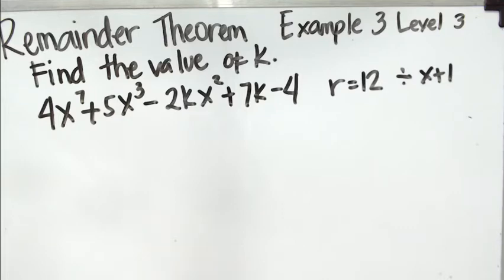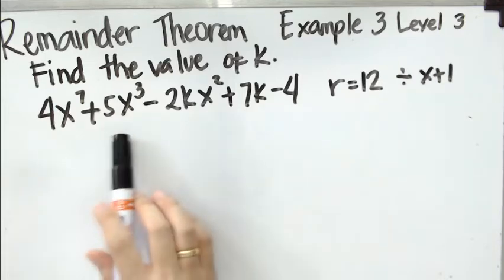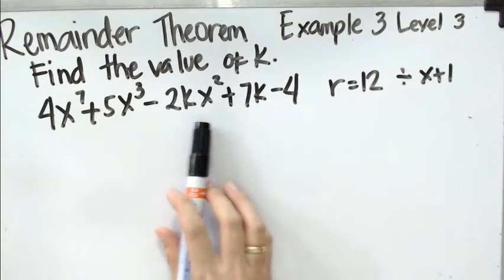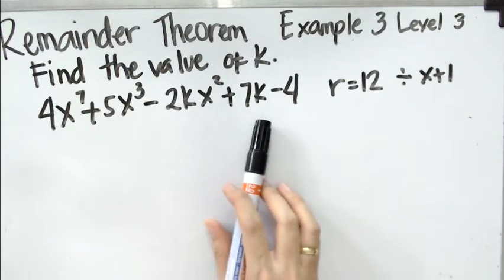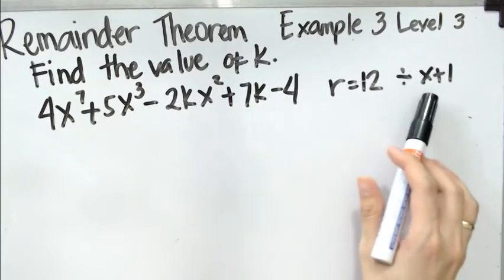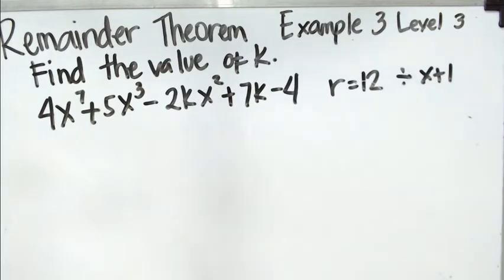Find the value of k when we have 4x to the 7 plus 5x cubed minus 2kx squared plus 7k minus 4 has a remainder of 12 when divided by x plus 1.